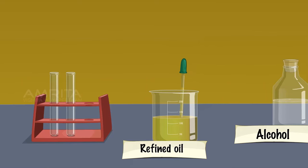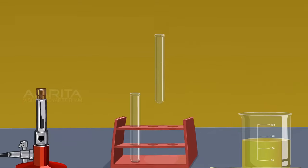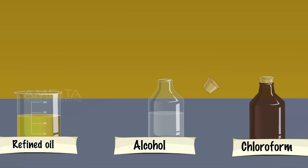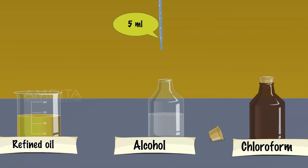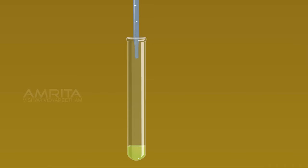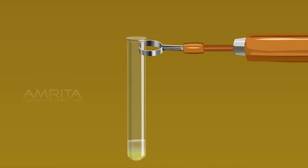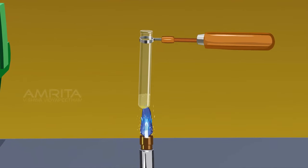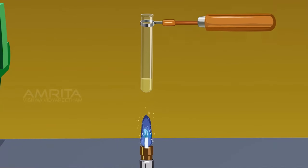Now take a small amount of refined oil in another test tube. Using another dropper, take about 5 ml of alcohol and add it into the test tube containing refined oil. The oil forms a lower layer. Hold the test tube with the test tube holder and heat it over the Bunsen burner. The lower layer of oil dissolves on heating.